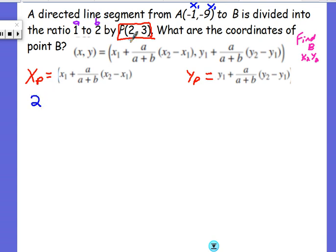Equals x sub 1, which is negative 1, right there negative 1, plus my ratio. My ratio is 1 to 2, 1 being my A, 2 being my B, so I have A.